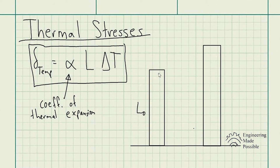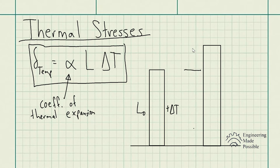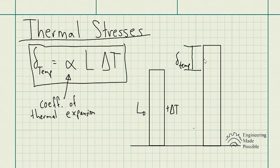Just so you can visually see: let's say you have a rod with the original length L0. If it's exposed to a significant temperature difference — say the temperature increases significantly — due to thermal expansion it will actually deform and have a longer length. This is the deformation due to the temperature, or the thermal expansion. This will either increase or decrease whether the material is getting hotter or colder, and this is the equation you're going to be using.